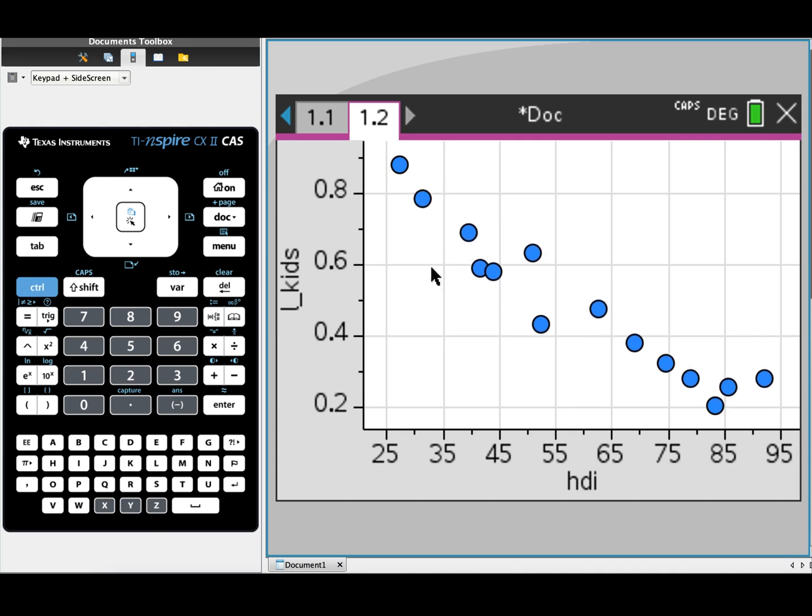Something to keep in mind is that you can only apply one transformation at a time. So if I have applied the log of Y transformation, I can't go back and apply, for example, an X squared transformation. I can only have one transformation at a time on my scatter plot.